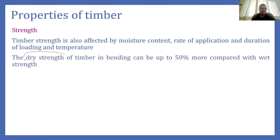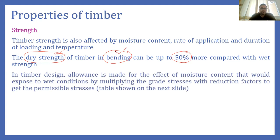Moisture content affects the strength of timber significantly. As a comparison, the bending strength of timber in the dry state is as much as 50% higher than in the wet state. Therefore it is very important to have dry timber with moisture content as low as possible. Various tests are conducted on timber elements to check strength — tensile test for tensile strength, compressive strength test, and bending test for bending strength.